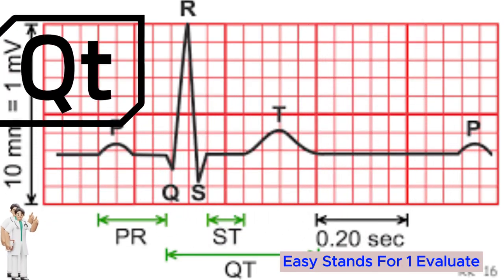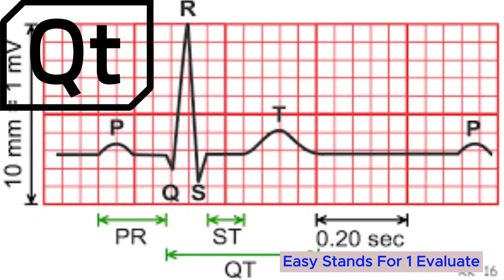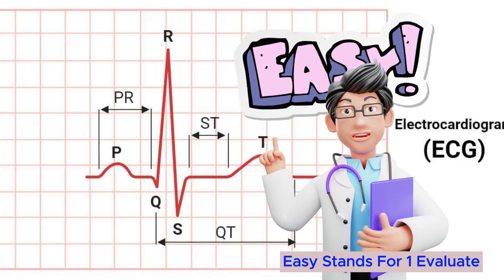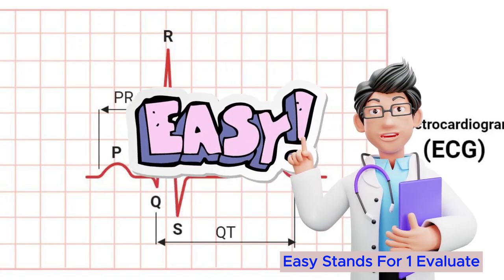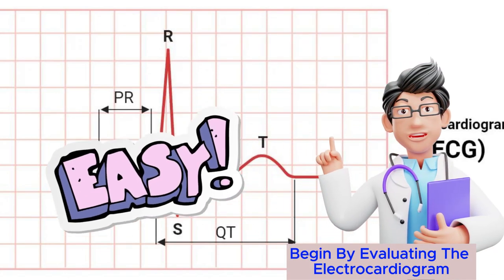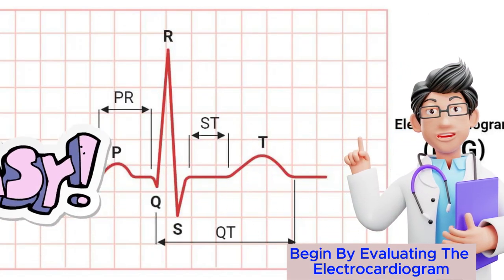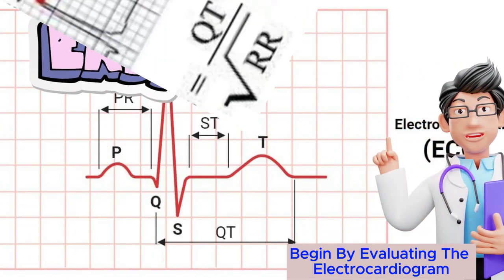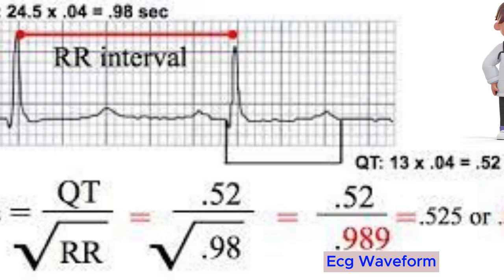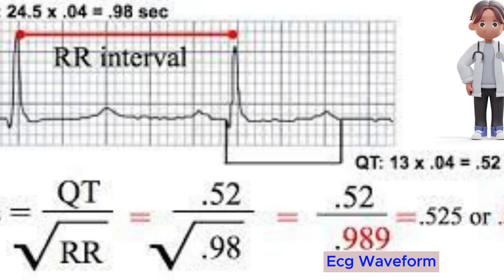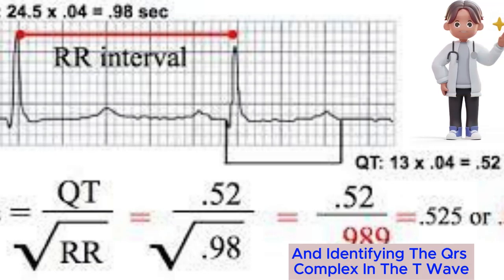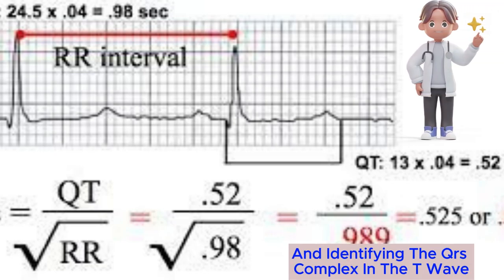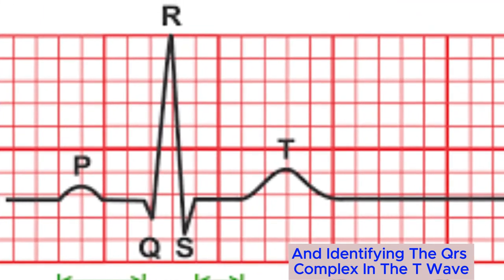EASY stands for: 1. Evaluate — begin by evaluating the electrocardiogram (ECG) waveform and identifying the QRS complex and the T wave.